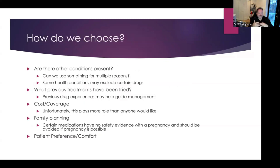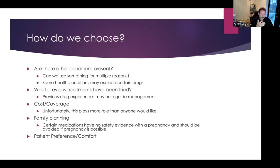How do we choose from this massive landscape? First, is there something we can use for multiple reasons? If someone also has mild blood pressure elevation and we need to treat both, why not use something that treats both? Certain health conditions and previous allergies may exclude certain drugs. What treatments have been tried before? What's been someone's experience with medications? I may not choose a medication with a higher likelihood of side effects if someone has had a really tough time with medications in the past. Unfortunately, cost and coverage plays more of a role than we'd like. And because of efforts like Migraine Canada, what's been available on public formularies and provincial plans has gone up significantly in the last few years.